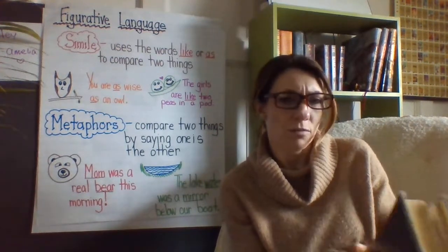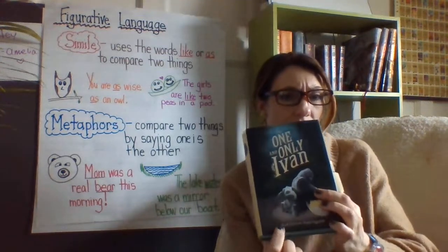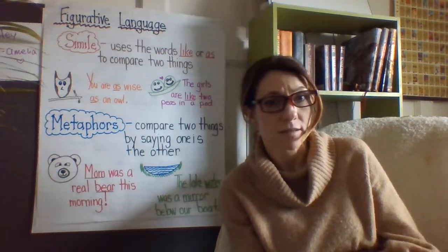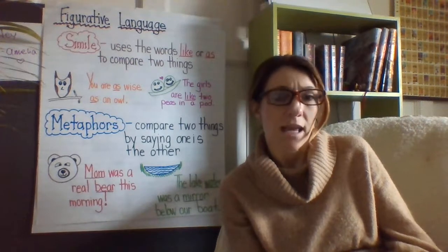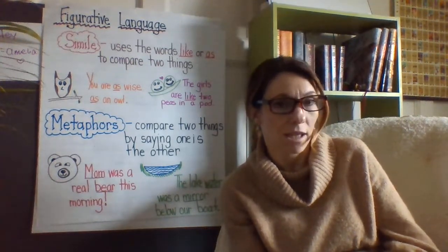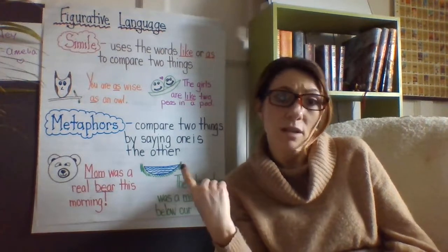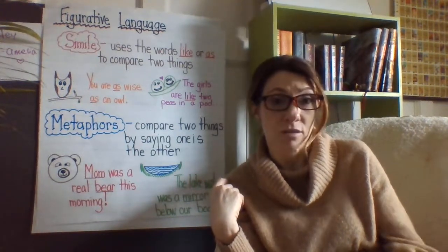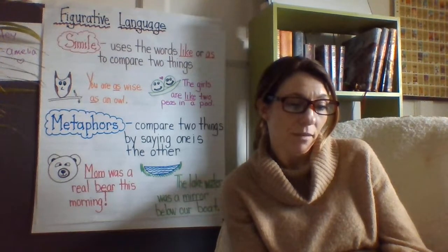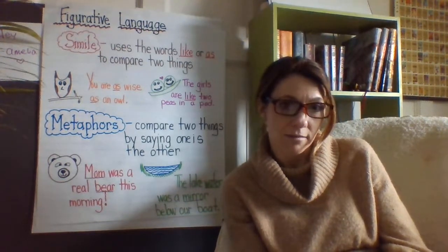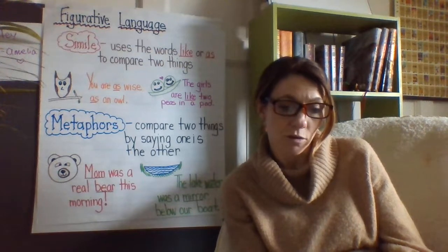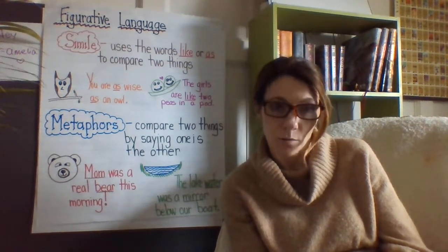I told you when we first started reading this in room 151 that Katherine Applegate, the author of this book, she doesn't waste words. The whole book is very visual and wants you to picture what is happening and really feel it. In that last paragraph, a bull elephant — that's a male elephant — is like a silverback: noble, contained, and calm like a cobra.